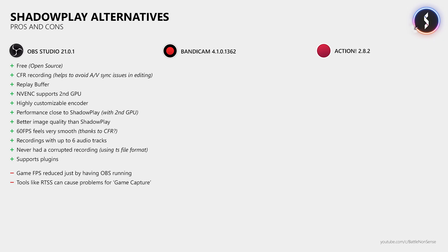I know that others don't have that issue and I only encounter it with Overwatch, so I don't know why it happens, but I want to mention it as it might be a problem for others. So if you are looking for a Shadowplay alternative, probably the biggest downside of OBS is that it doesn't have an in-game overlay. This means that with just one monitor, you have no idea if OBS detected the game, no way to tell if the recording is active, and you get absolutely no feedback when you press the hotkey to save the replay buffer. Sadly, there are also no plugins that fully resolve this issue, at least not as far as I'm aware.